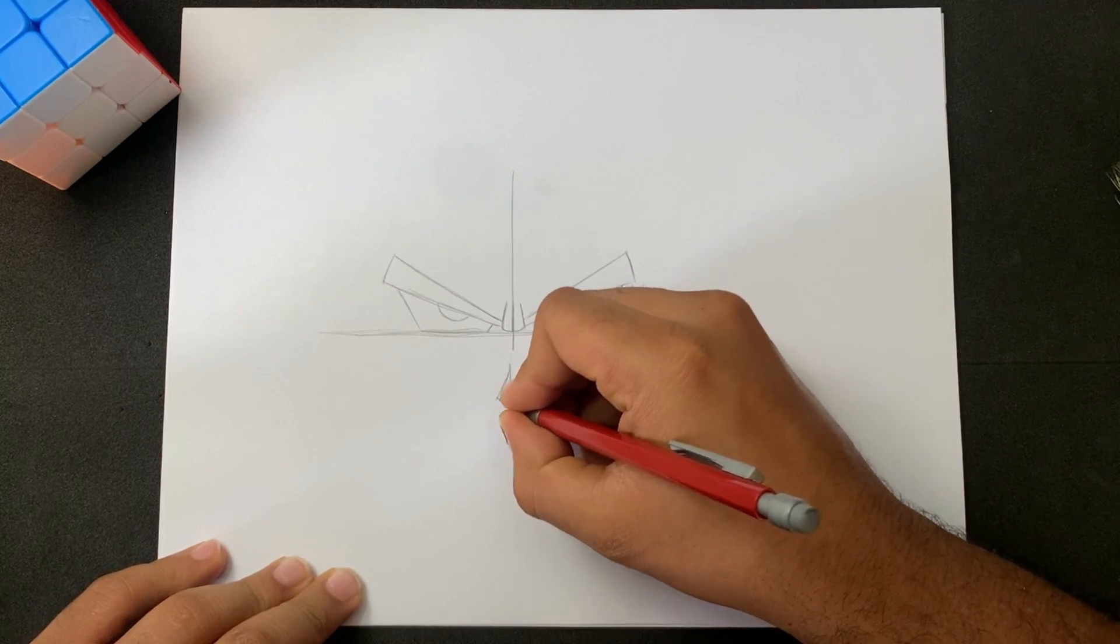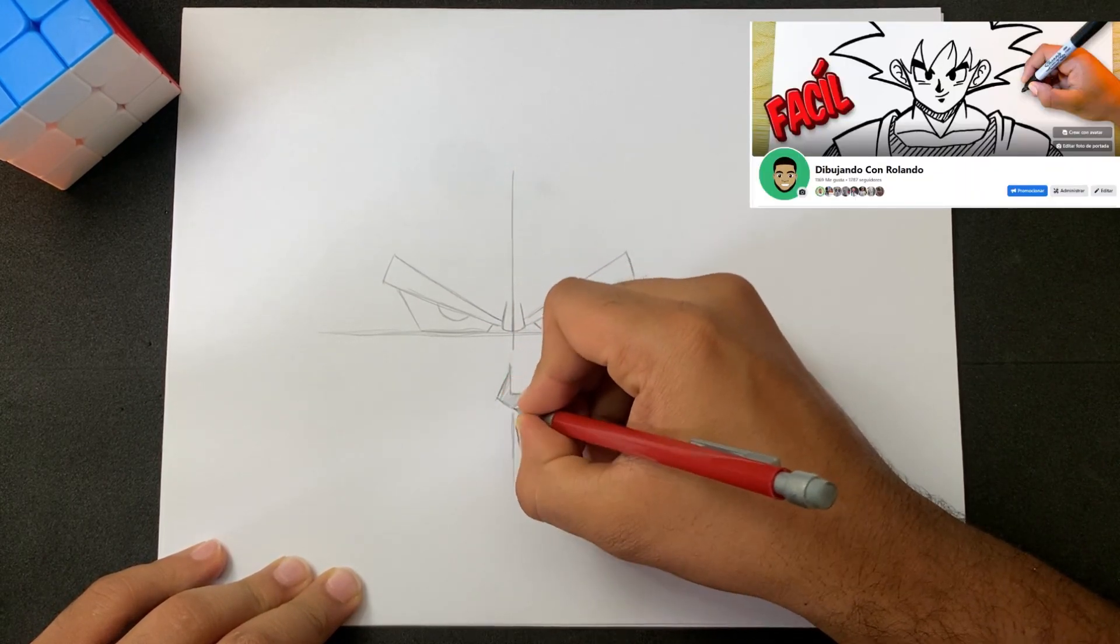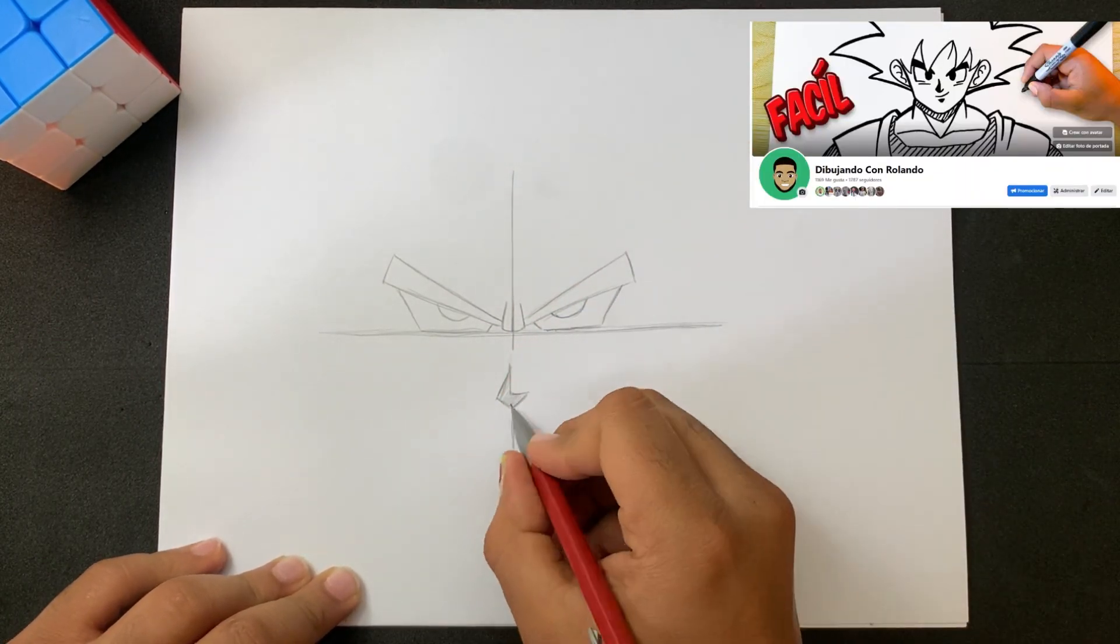The nose is like a triangle and the mouth is placed very close to the nose.